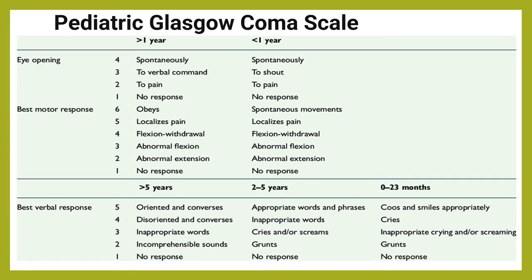If a patient is comatose, we scale the coma using the pediatric Glasgow Coma Scale. The scale is scored between 3 and 15, with 3 being the worst and 15 being the best. It is composed of three parameters: best eye response, best verbal response, and best motor response, and these components should be recorded individually.